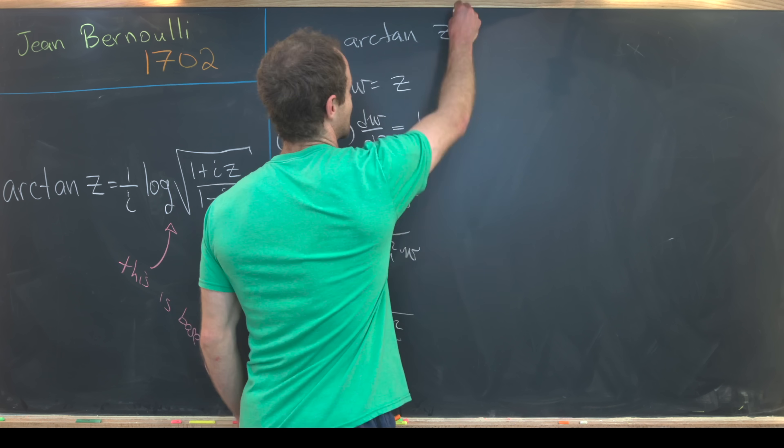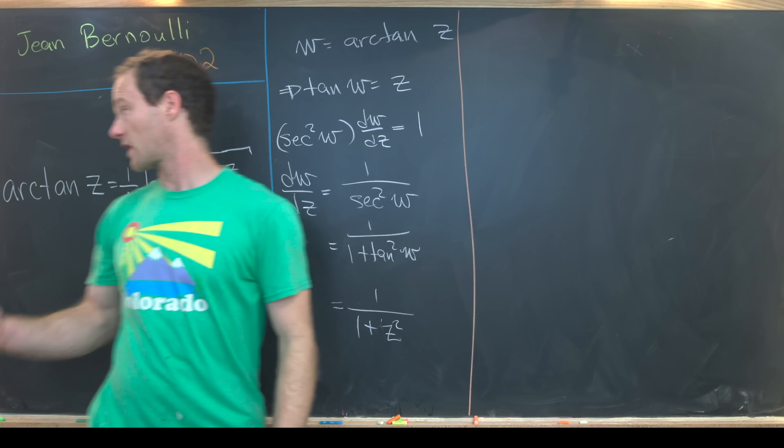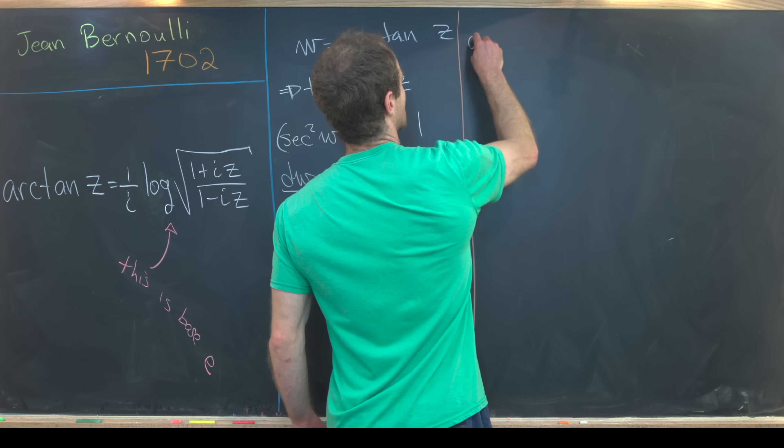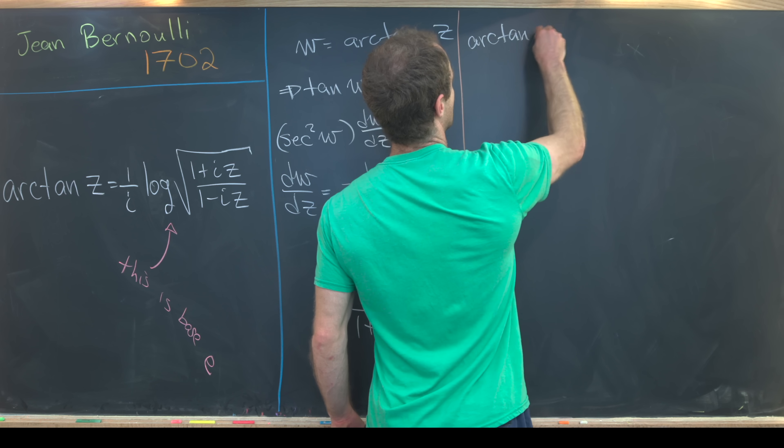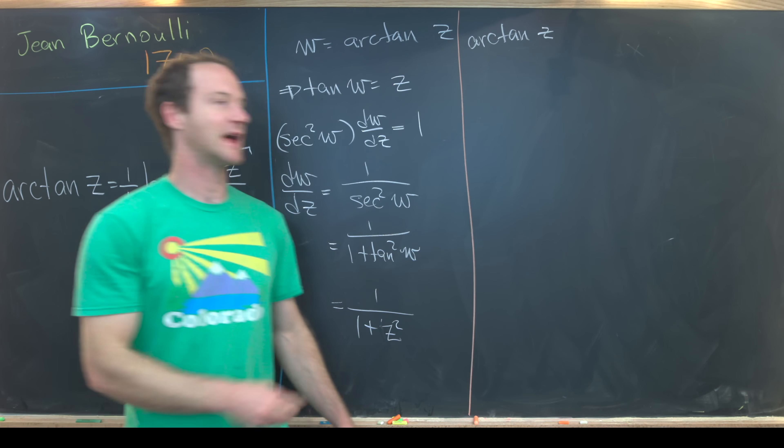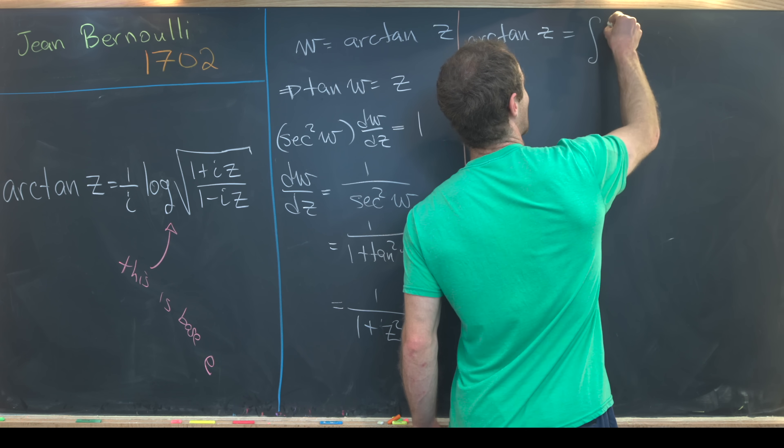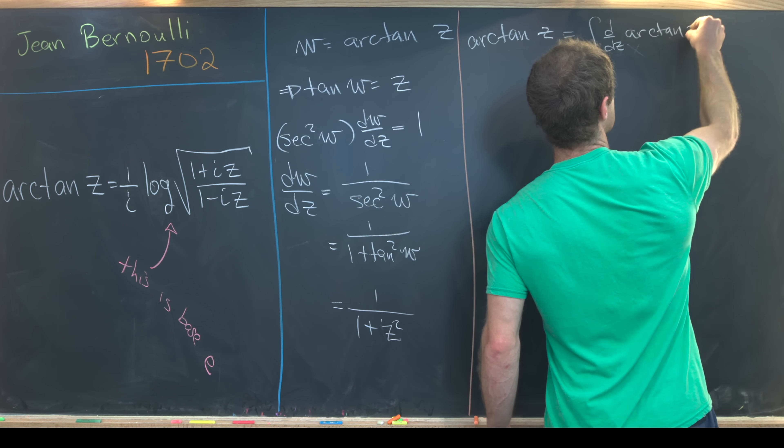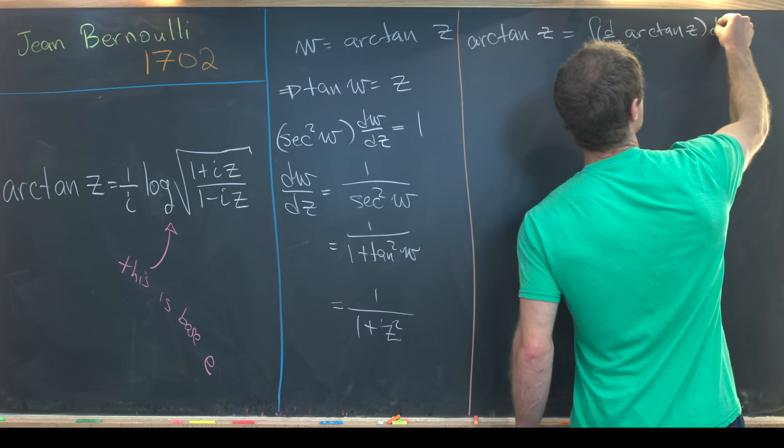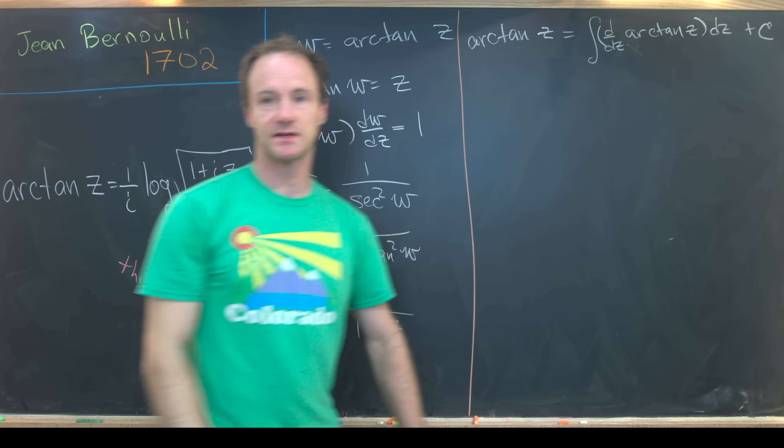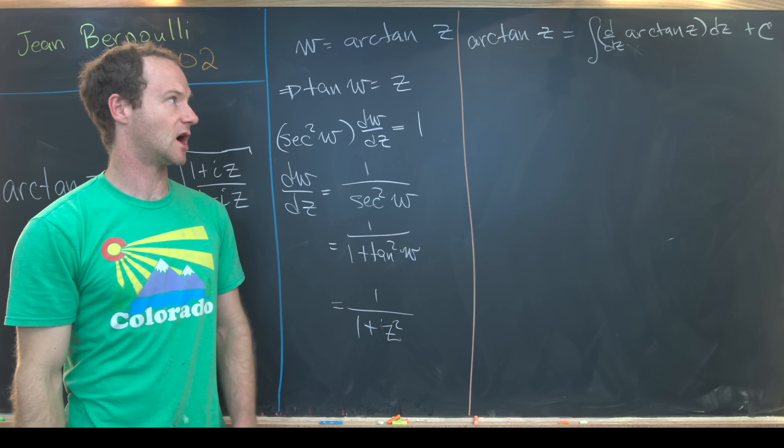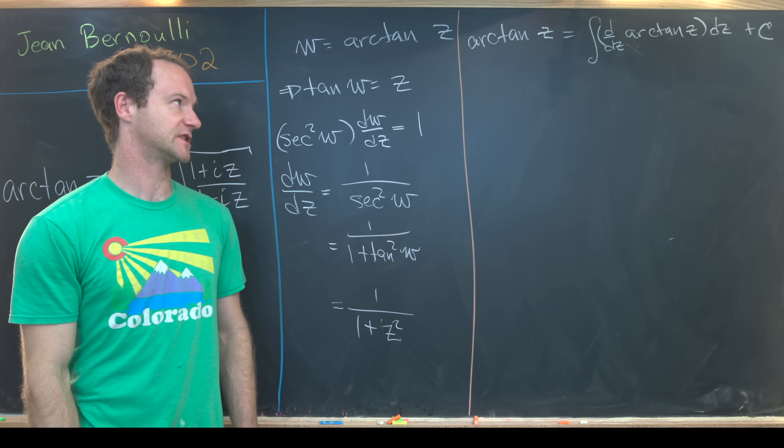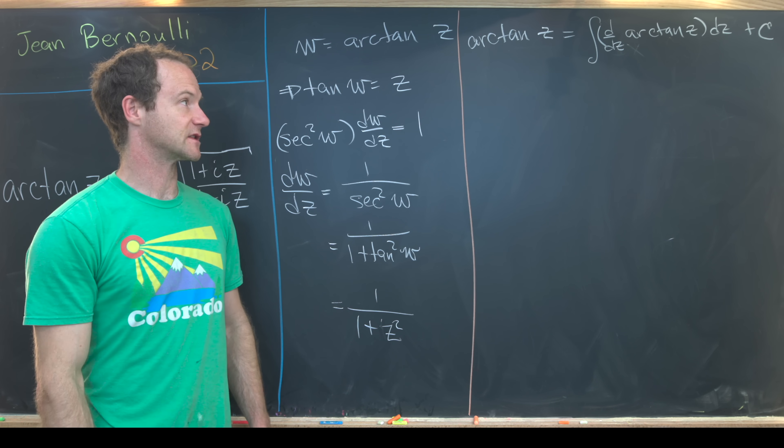So now that we've got that taken care of, we're going to construct this identity using an integral. I'm going to start with arctan of z, but I know I can write that as the antiderivative of the derivative of arctan of z plus some constant. You obviously get a constant of integration whenever doing this. Our goal will be to show that constant of integration is zero at the end.